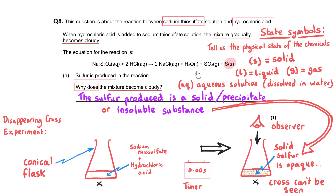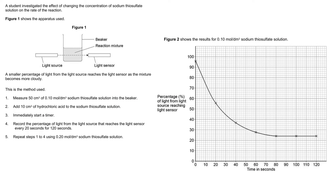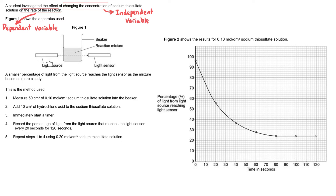The other state symbols: water is liquid, sulfur dioxide is a gas, and the other three chemicals are aqueous, meaning they are dissolved in water. A diagram shows how this experiment is set up — it's a bit different to the normal disappearing cross experiment. The student investigated the effect of changing the concentration of sodium thiosulfate on the rate of reaction. There is a light source shining through the reaction mixture and a light sensor on the other side detecting the percentage of light that gets through. A smaller percentage of light reaches the sensor as the mixture becomes more cloudy.